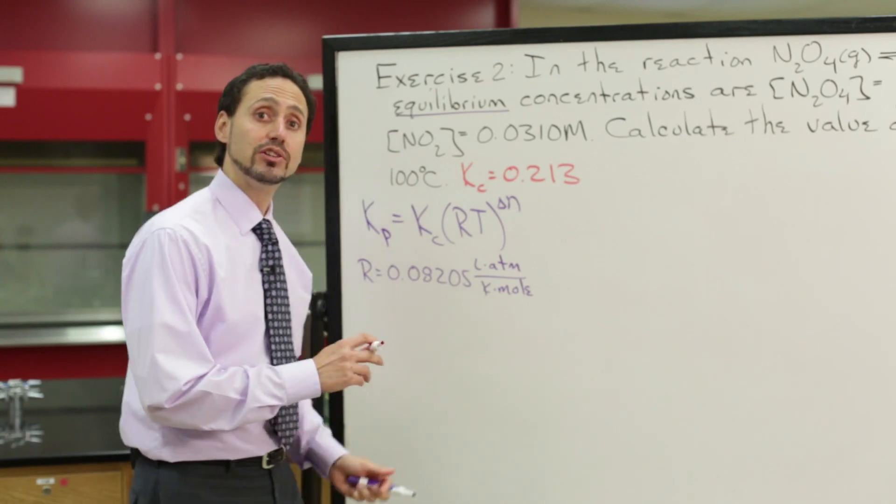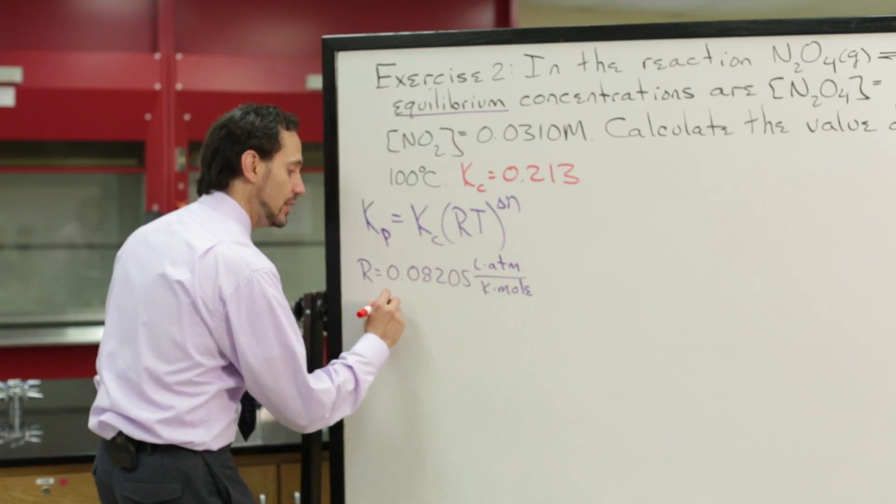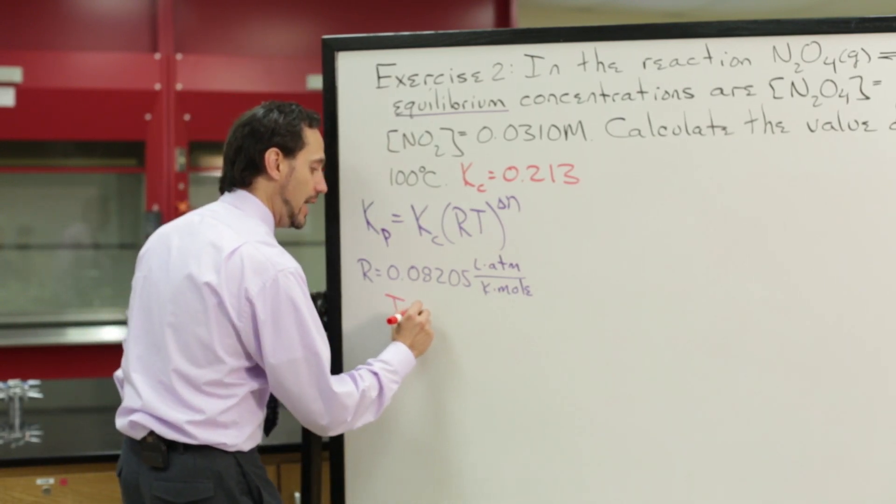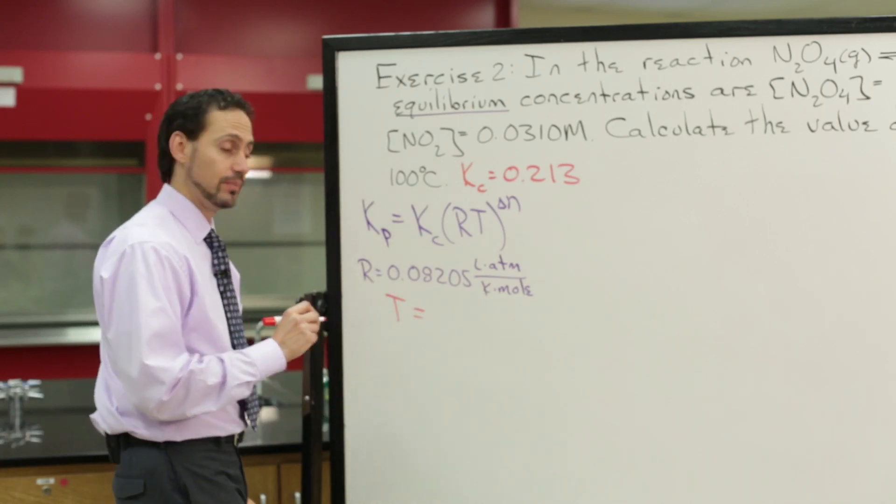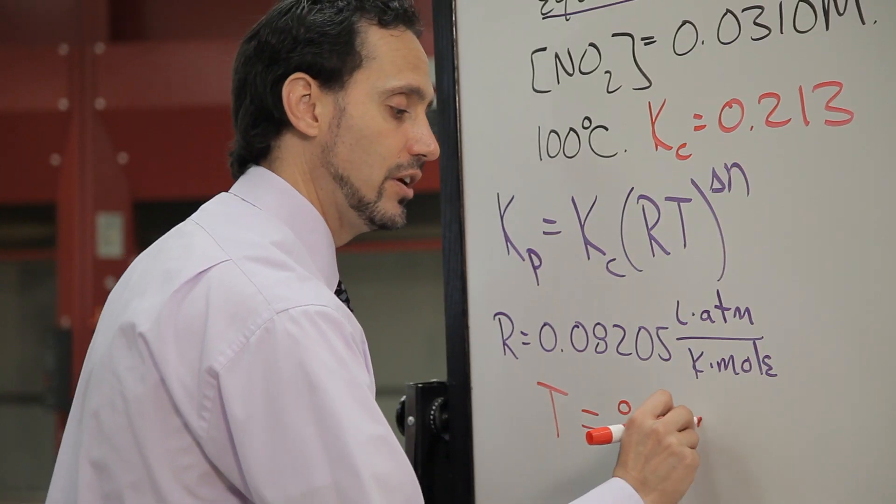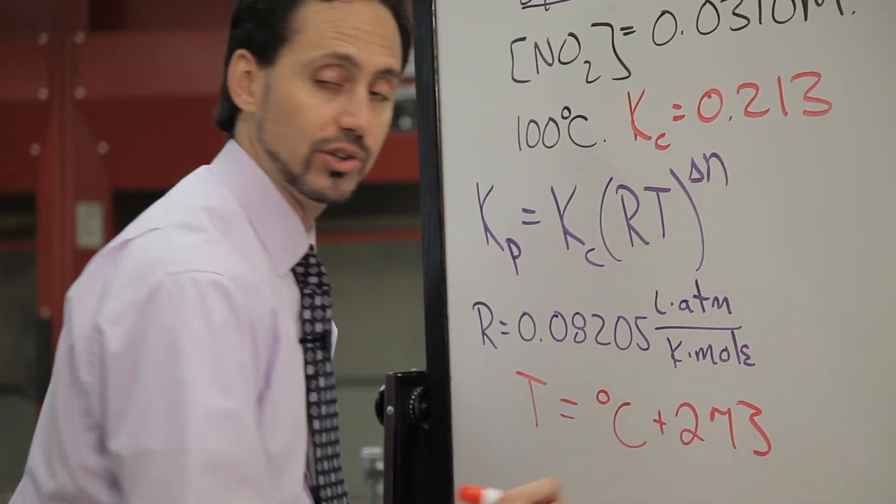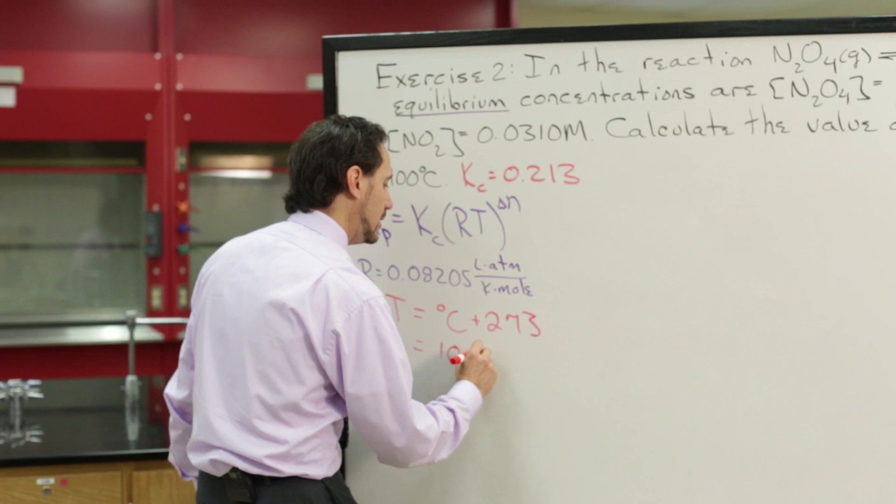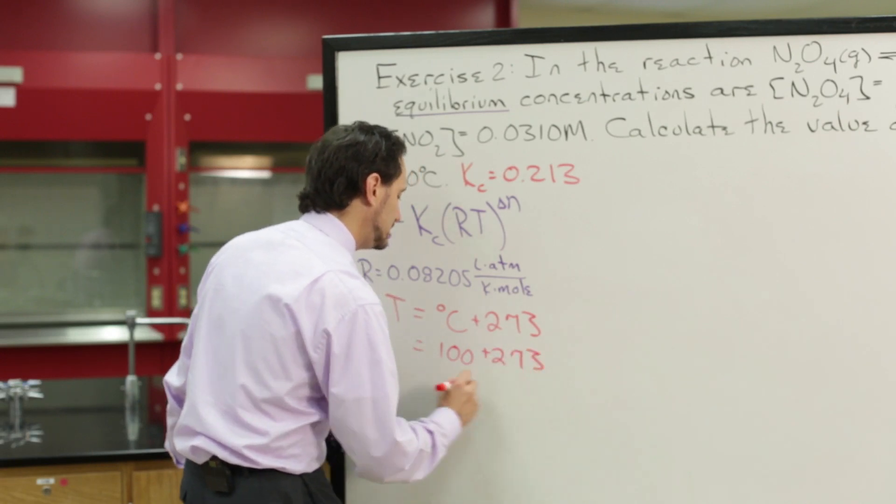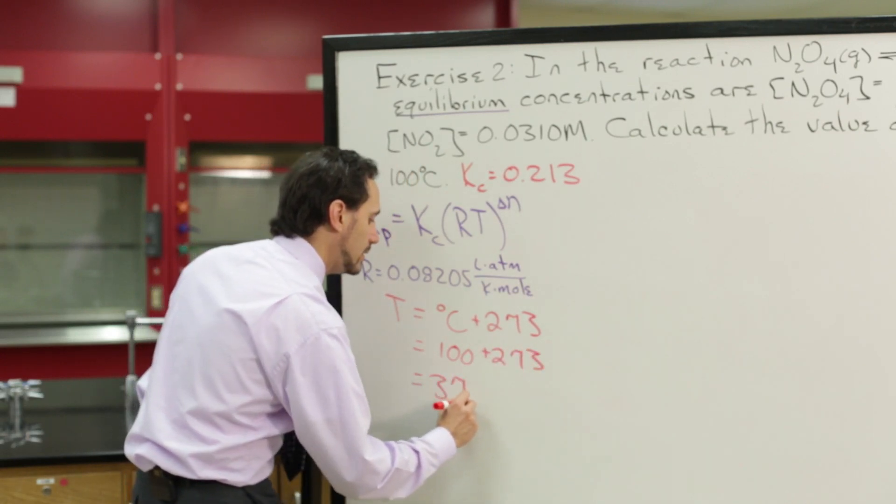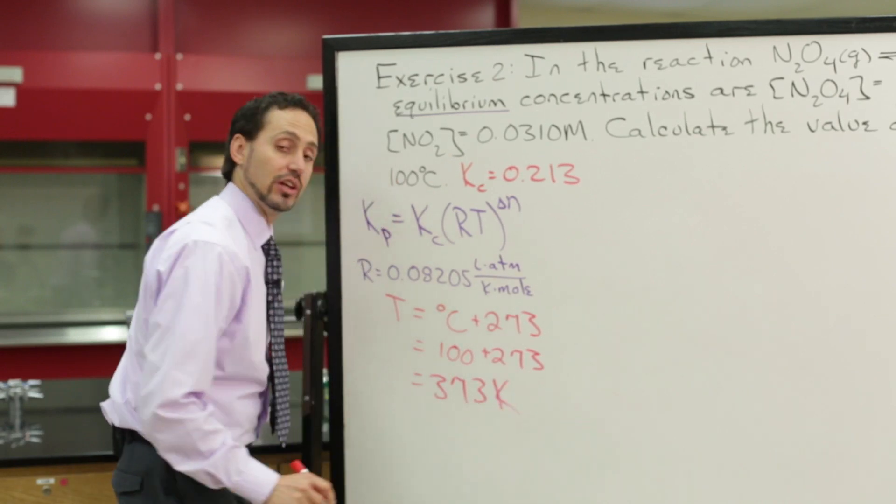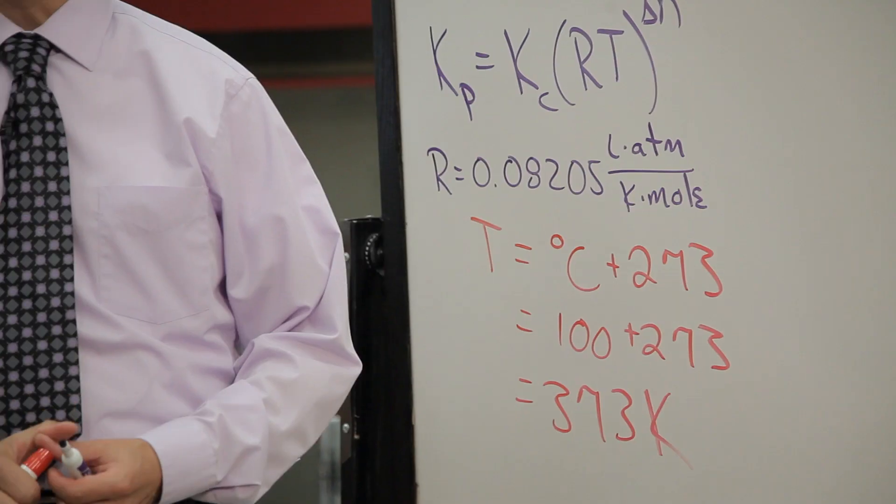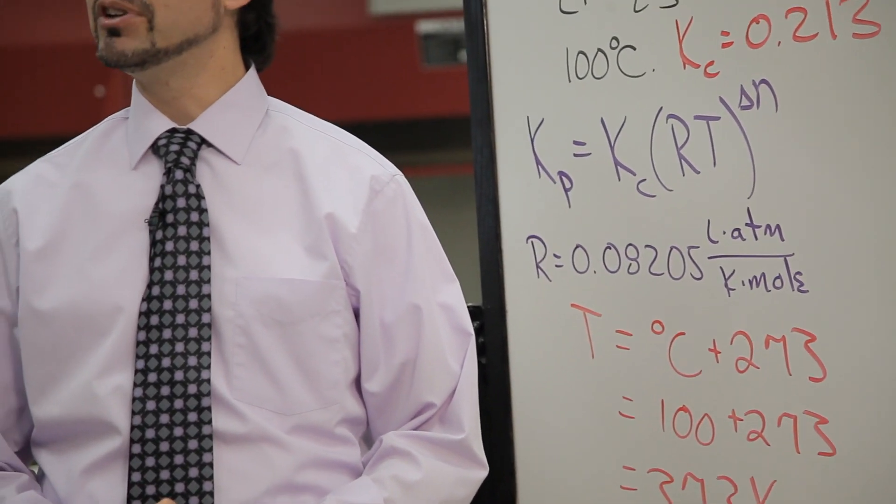So the first thing we need to do is to write temperature in units of Kelvin, and Kelvin temperature is taking the degrees Celsius plus 273. So 100 plus 273 tells us that the temperature we'll use in this calculation is 373 Kelvin.